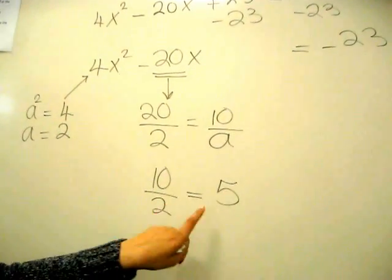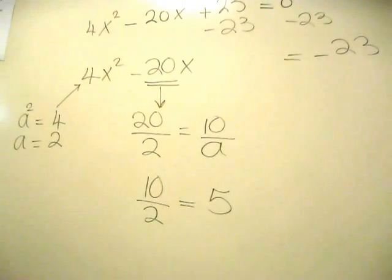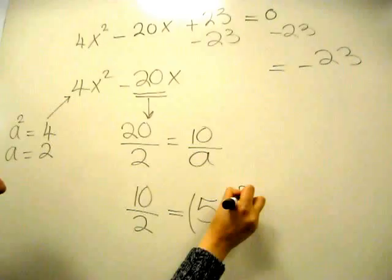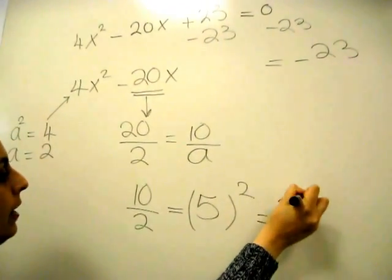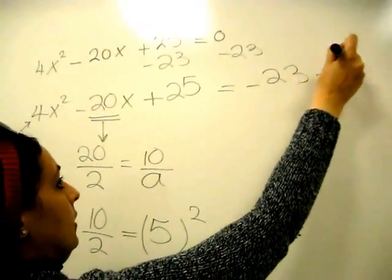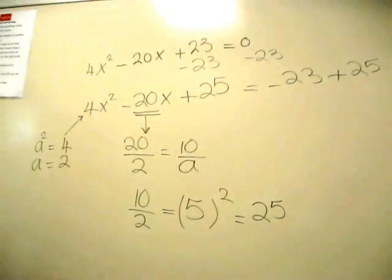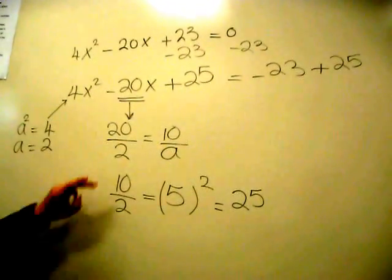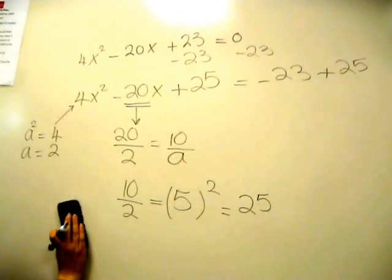That number squared is your perfect square. So you take that number, square it, you get 25. And that's what I'm going to add here and here. I'm going to erase that so I can continue, but those are the steps.